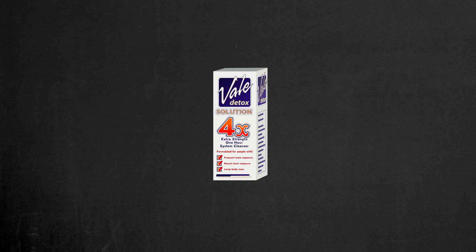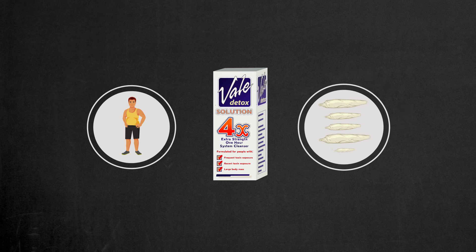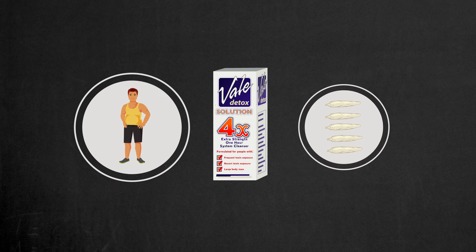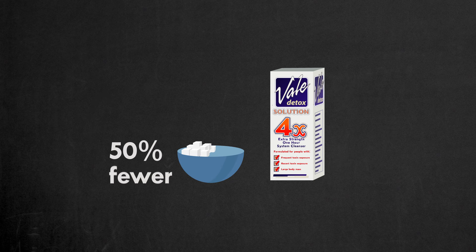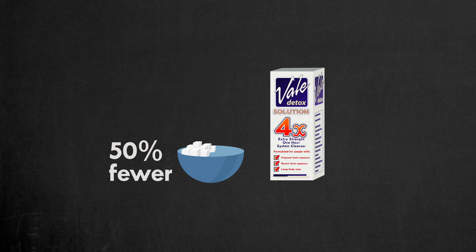And the last product in our list is Veil's 4X Solution. Veil's Solution 4X is created for people who weigh over 200 pounds and for heavy smokers. It contains 50% fewer carbohydrates than the majority of popular detoxifying drinks. It starts working in one hour and is effective for up to five hours.